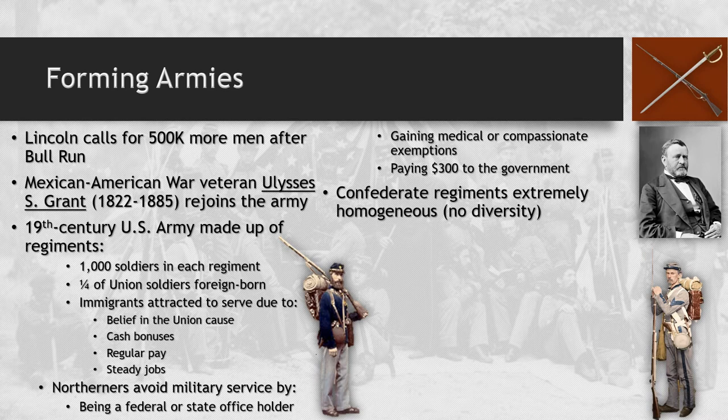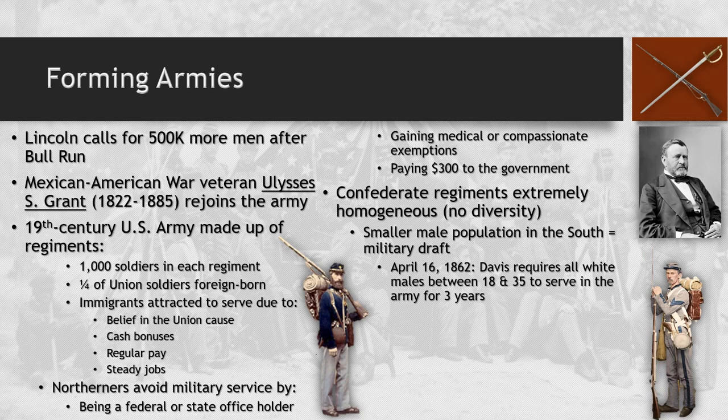Confederate regiments are very homogenous — individuals born and raised in the South, very few immigrants, and all white males. There are no African-American soldiers on the Confederate side until the very end of the Civil War. The South has a very small male population, which leads to a large military draft. On April 16th, 1862, Jefferson Davis requires all white males between the ages of 18 and 35 to serve in the army for three years.